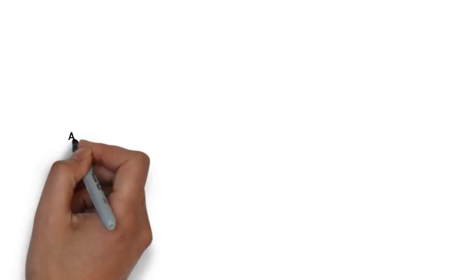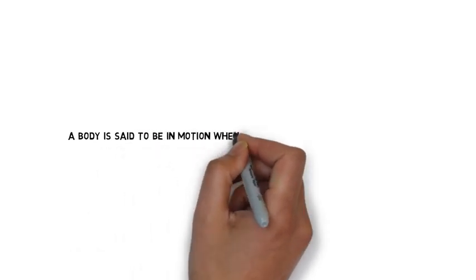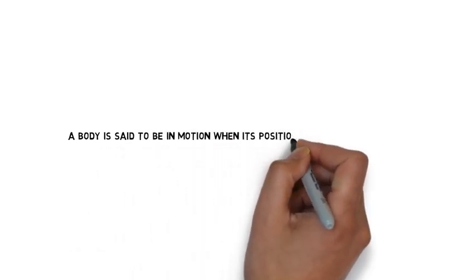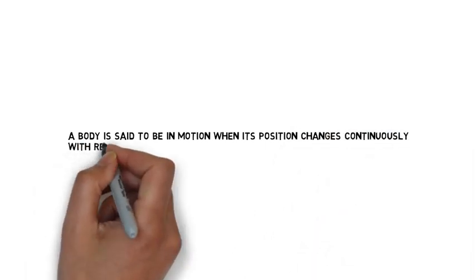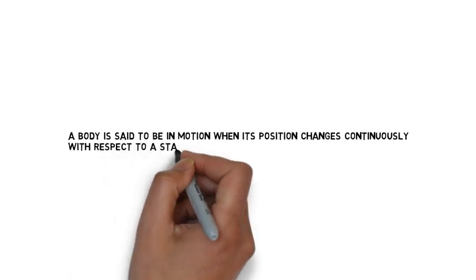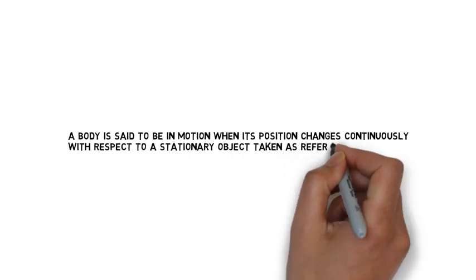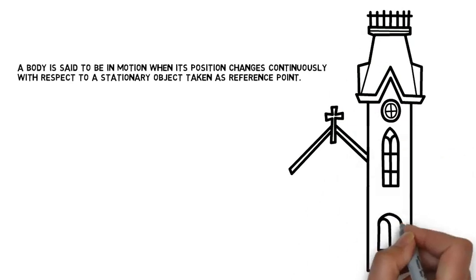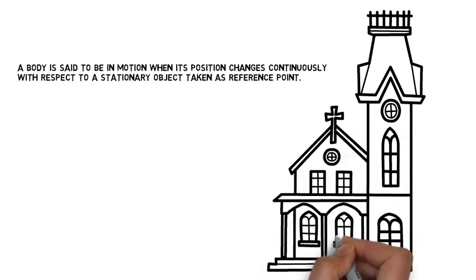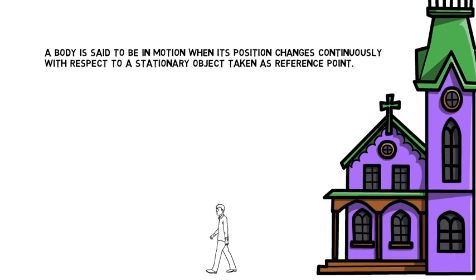A body is also said to be in motion when its position changes continuously with respect to a stationary object taken as a reference point. You can see a charge there, and now you can see a man walking and moving away from the charge. Taking the charge as a stationary reference point, we can say the man is in motion.